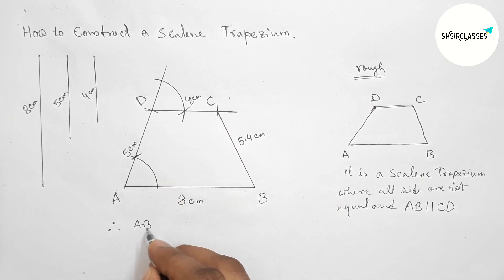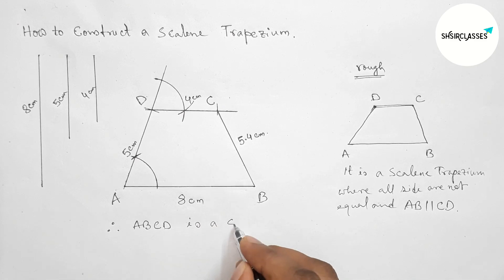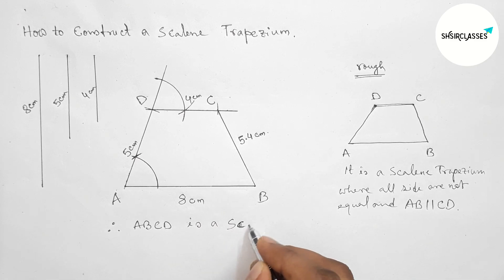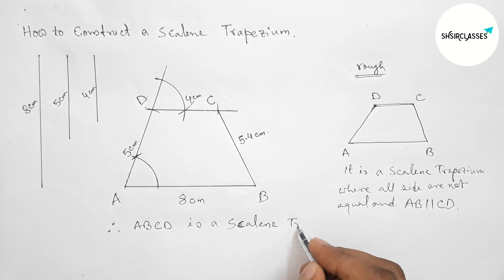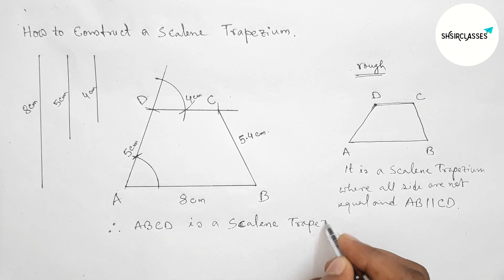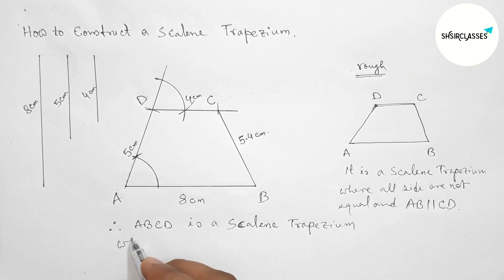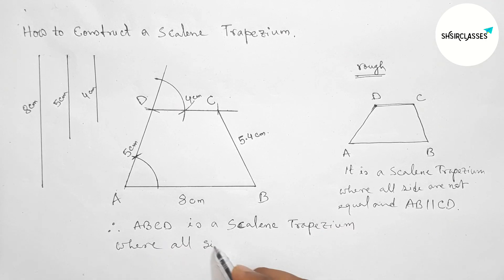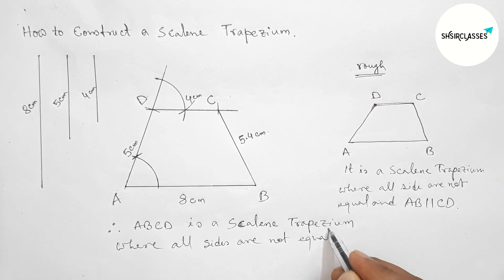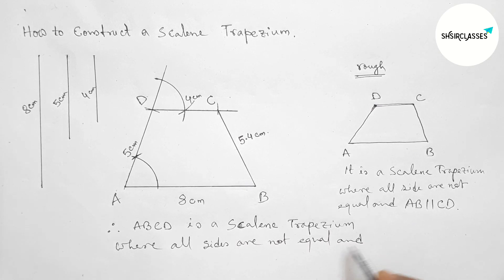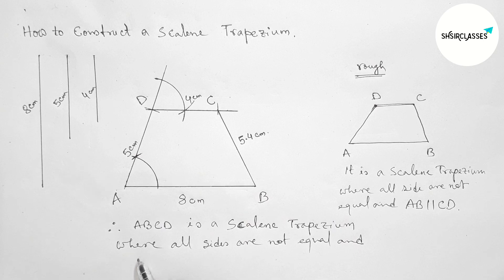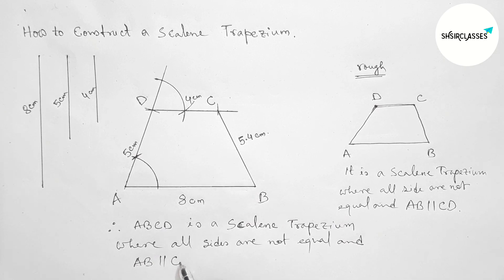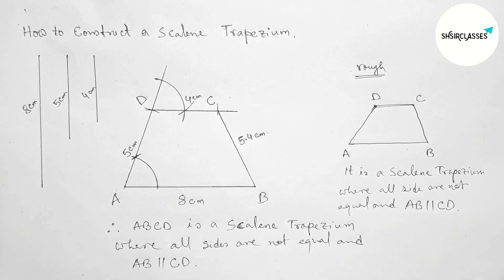So finally we got our scalene trapezium ABCD. Therefore ABCD is a scalene trapezium where all the sides are not equal and the sides AB and CD are parallel. That's all, thanks for watching.